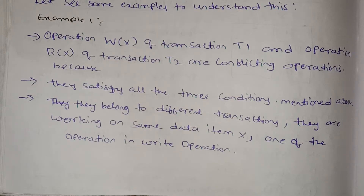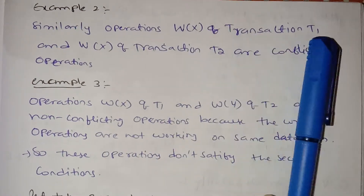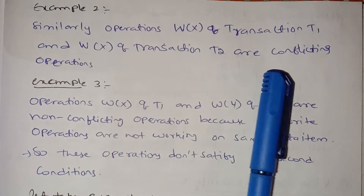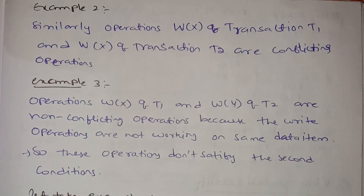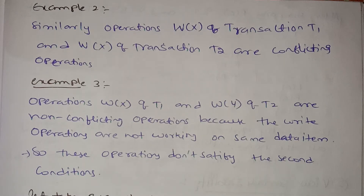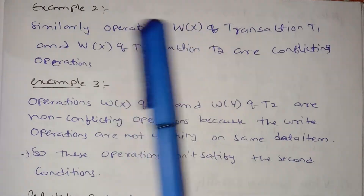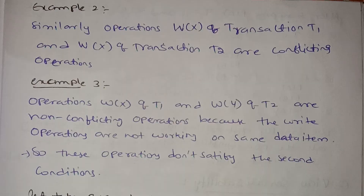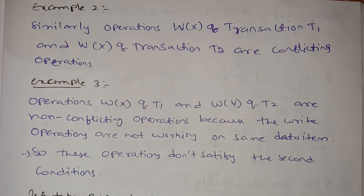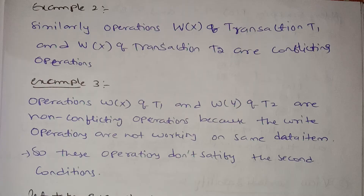Example 2: operations W(X) of transaction T1 and W(X) of transaction T2 are conflicting operations. They belong to different transactions. The data item X is the same. There are two write operations, so the write operation condition is also satisfied. We call these conflicting operations.